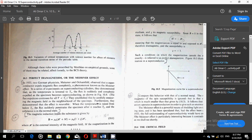You can see Figure 10.3 now, as mentioned just now. Although these rules were prescribed by Matthias on empirical grounds, some of them may be related loosely to the BCS theory. Now, perfect diamagnetism or the Meissner effect.